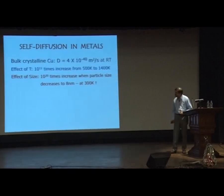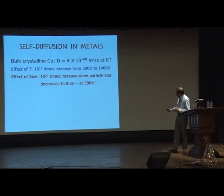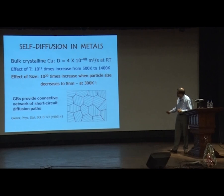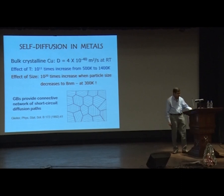Take self-diffusion in metals: in bulk crystalline copper, the self-diffusion coefficient is extremely low — like 10 to the power minus 40 or so. You can increase it by temperature by about 10 to the power 11 times, but by changing particle size you can do the same thing to the tune of about 10 to the power 20 times — much larger. This is likely the largest change you can see in any property as a function of any other variable, because diffusion can take a short-circuit path through grain boundaries.